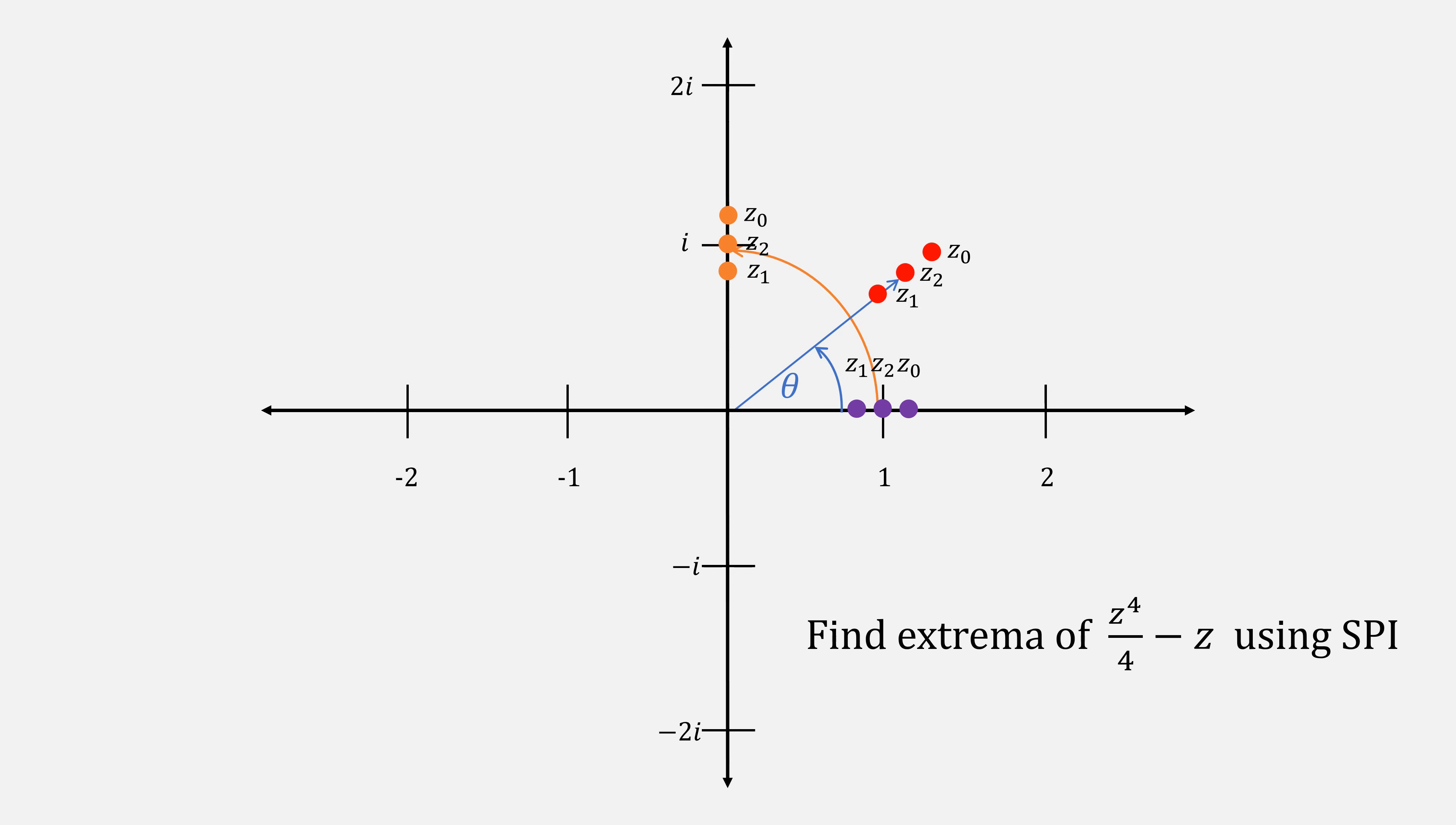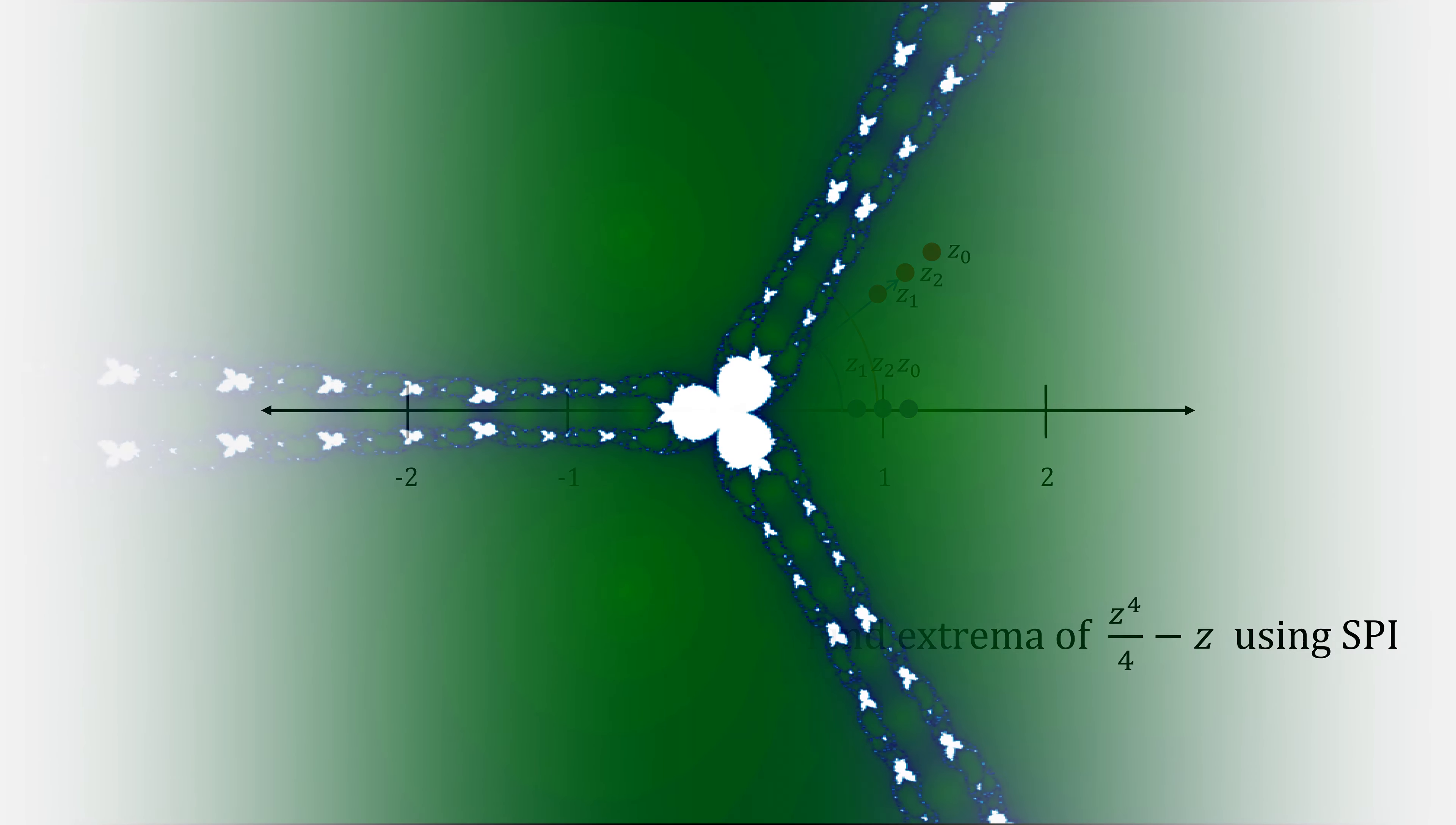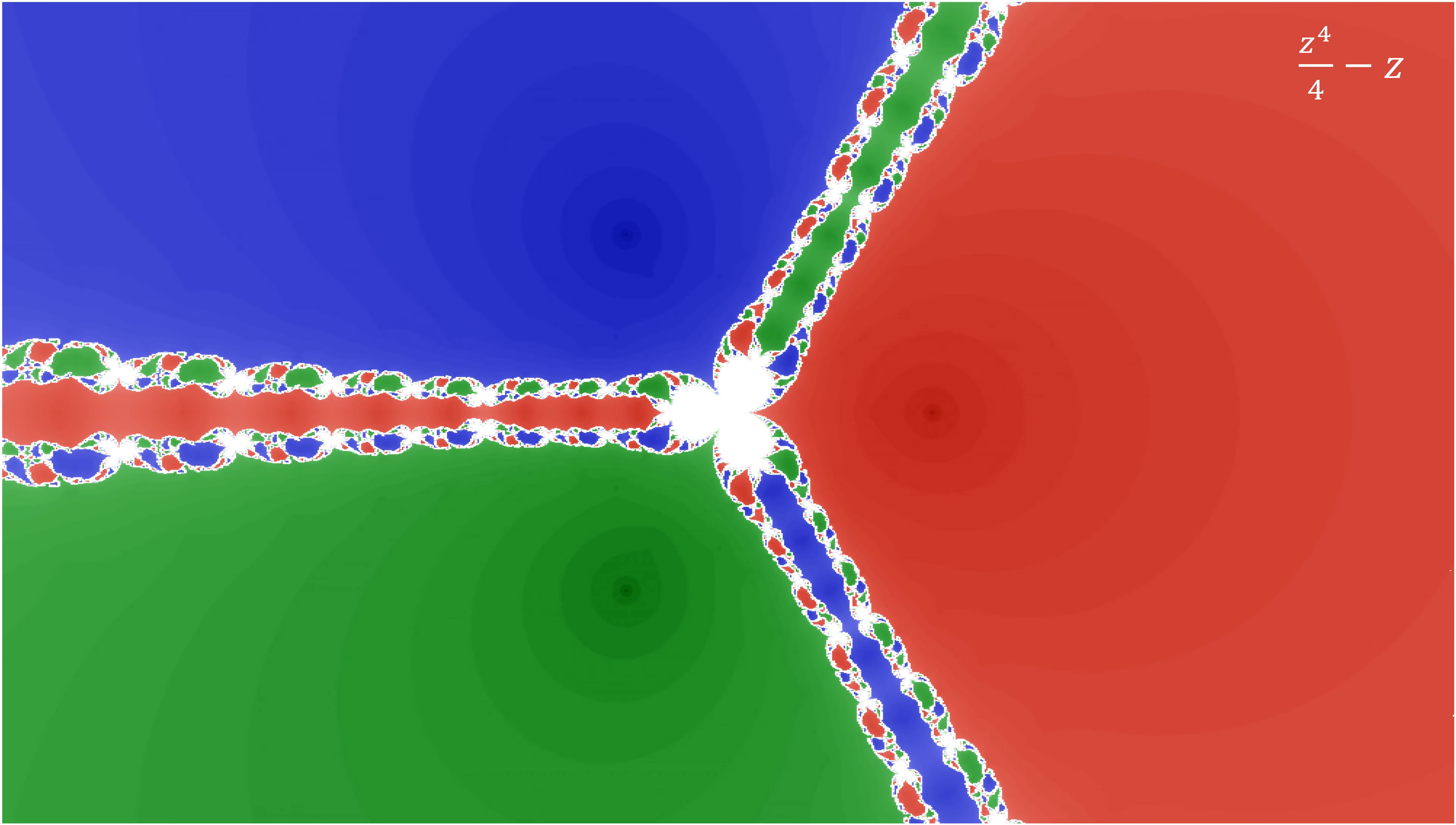Let's try to find the extrema of the function z to the fourth over four minus z using Jarratt's method. Giving us our Jarratt fractal for this function. Let's actually color it not on whether it converged or diverged, but rather which extrema it converged to. Which looks like this.